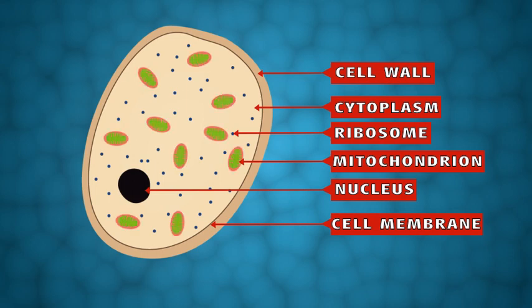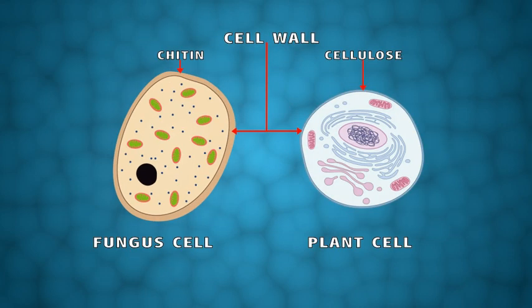Fungal cell walls are made of a substance called chitin. Remember that plant cell walls are made up of cellulose.